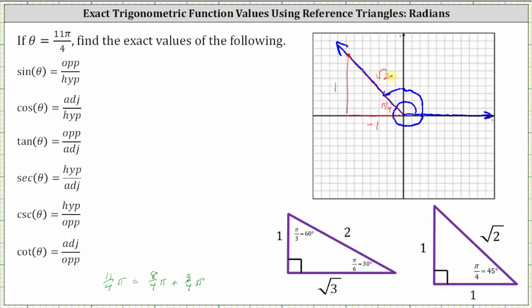Now we use this red reference triangle to determine all six trig function values. Since sine theta is equal to the ratio of the opposite side to the hypotenuse, sine of 11 fourths pi radians is equal to one divided by square root two. Rationalizing the denominator by multiplying numerator and denominator by square root two gives us square root two divided by two.